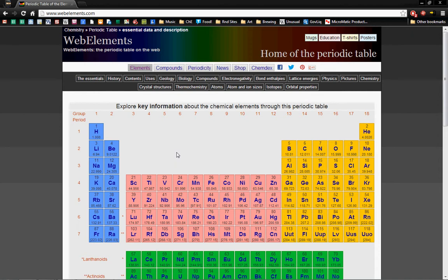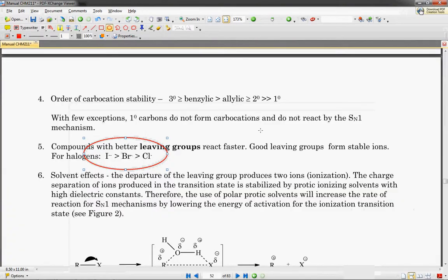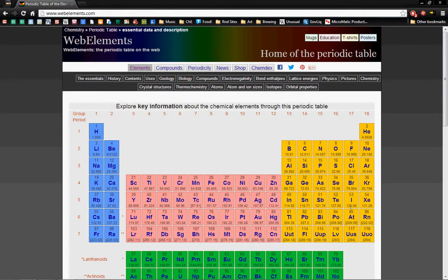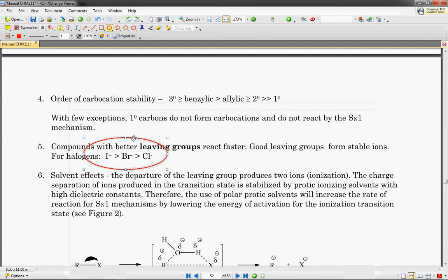the larger radius is to the right and up. So fluorine has smaller radius than chlorine. Chlorine has a smaller radius than bromine. Bromine is smaller than iodine. So the better leaving groups are ones with larger radiuses or radii to be technical.